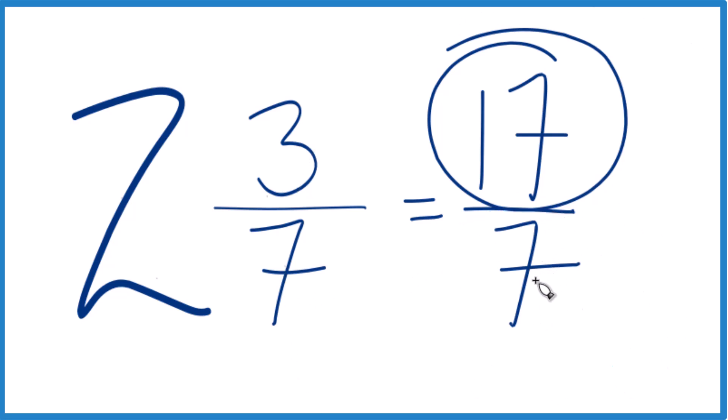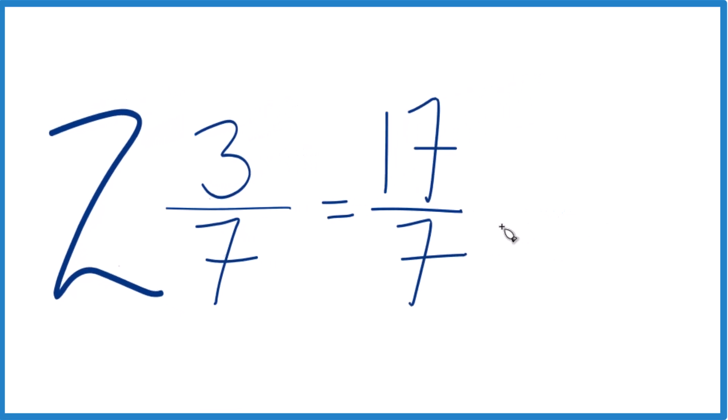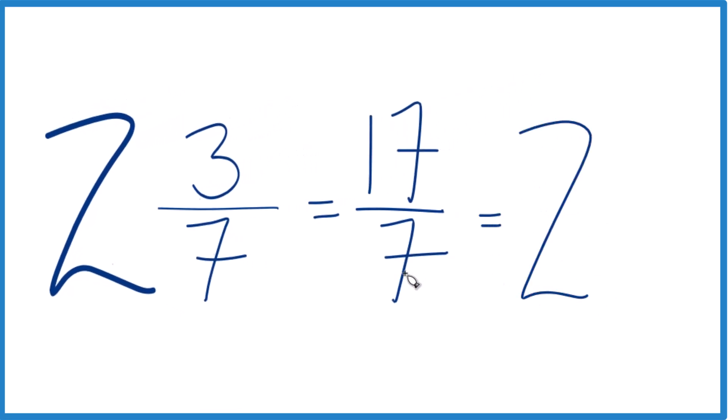And we can check our work here. 7 goes into 17 two times, because 2 times 7, that's 14. And then we'd have 3 left over. Bring the denominator across, we get 2 and 3 sevenths. That's what we started with.